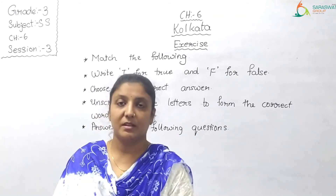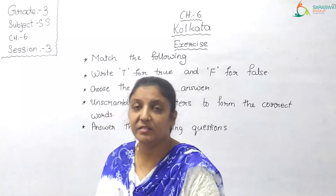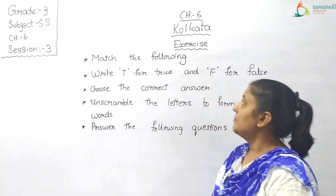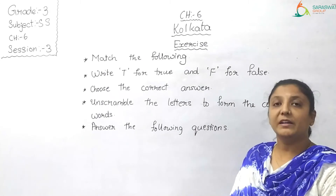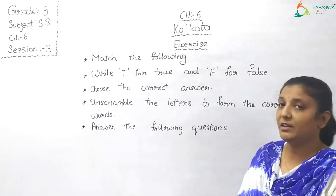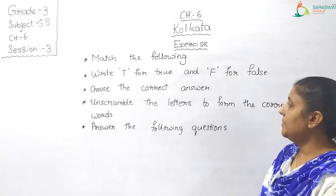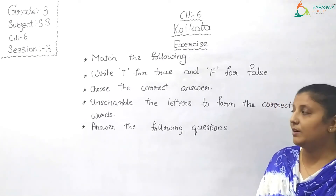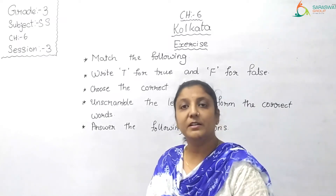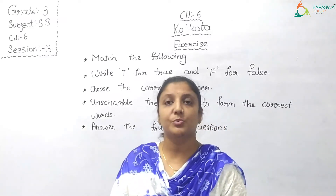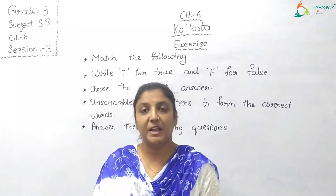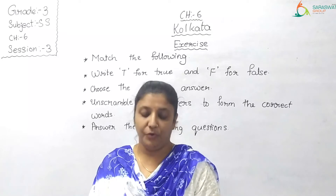Now coming to the exercise. The main questions in this chapter's exercise are: match the following, write T for true and F for false, choose the correct answer, unscramble the letters to form the correct words, and answer the following questions. Let us discuss all these questions one by one, starting from the first — match the following.